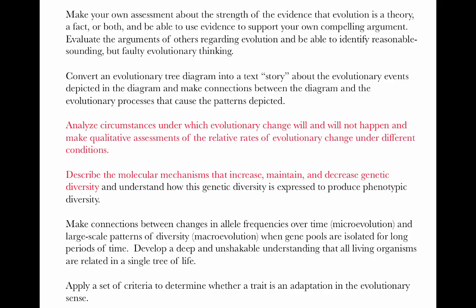Just to remind you of the major learning goals in this course, we've been talking a great deal about circumstances under which evolutionary change will and will not happen — first in terms of Darwin's four postulates at the trait level, and then using the Hardy-Weinberg conditions at the molecular level. We've started to talk about the molecular mechanisms that increase, maintain, and decrease genetic diversity, which is key because Darwin's first postulate requires that organisms vary, and that phenotypic variation requires underlying genetic diversity.